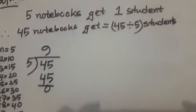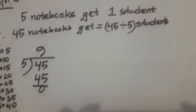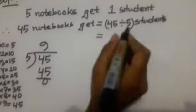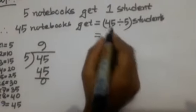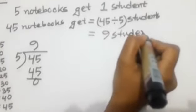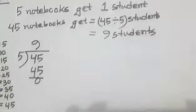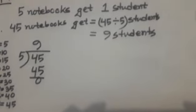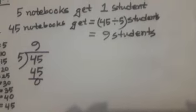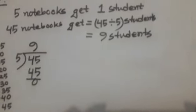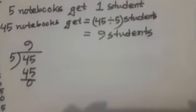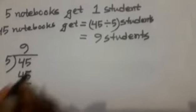Our answer is: 5 nines are 45. So 9 students. How many students will get a notebook? 9 students can get a notebook. Our answer is 9 students.